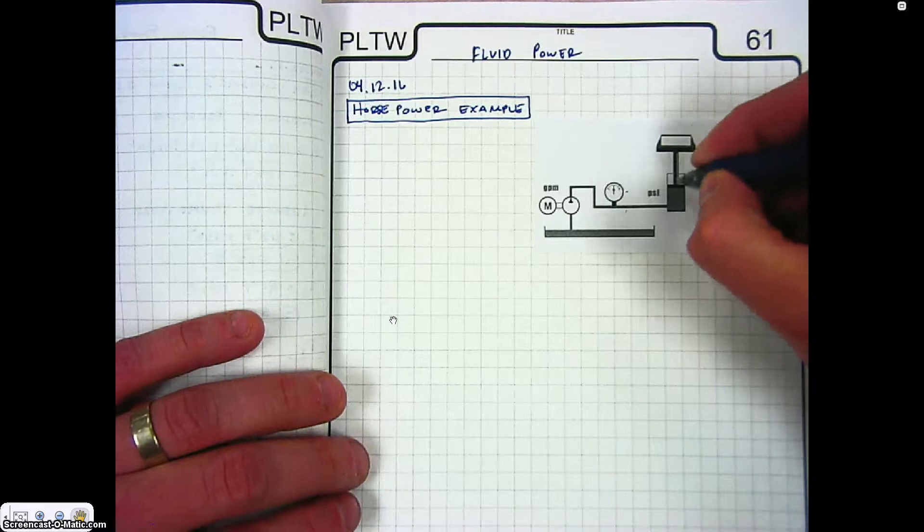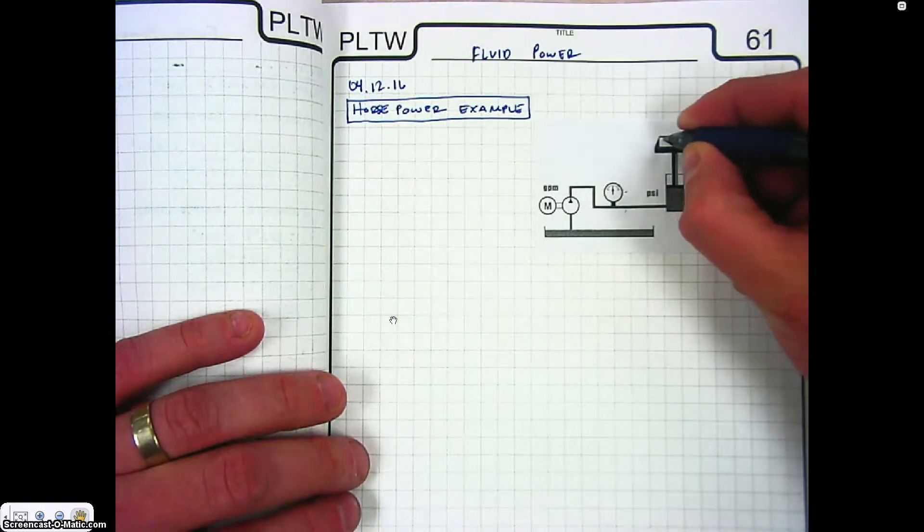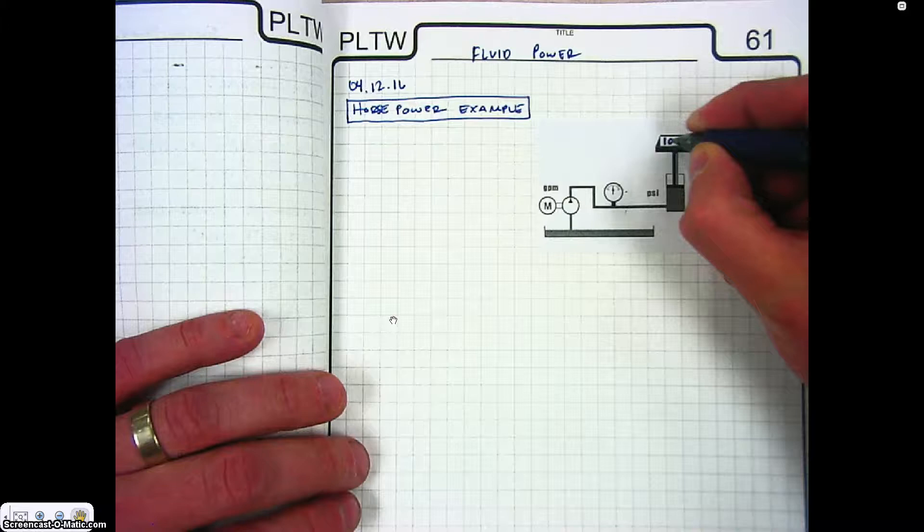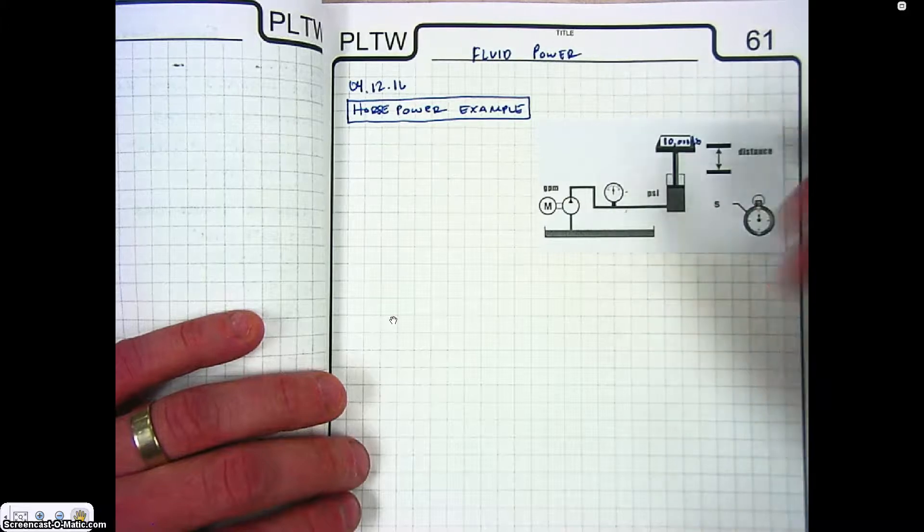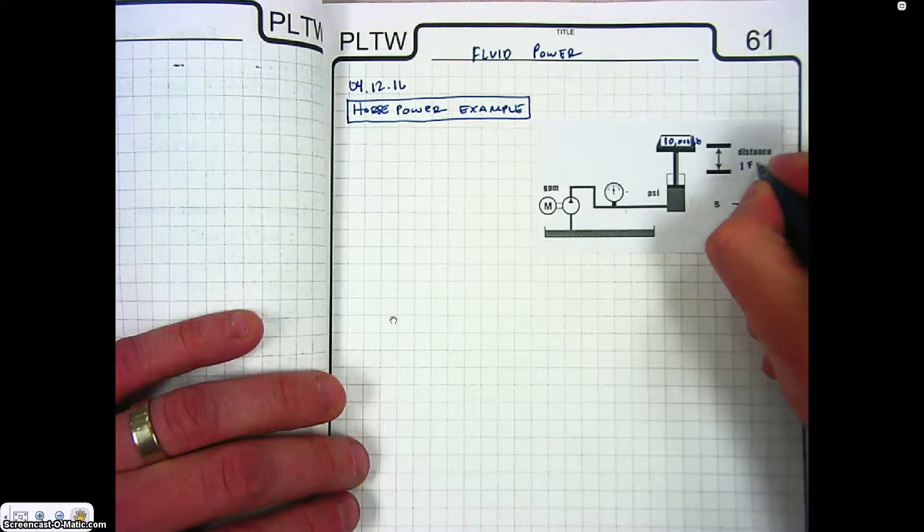We have a weight we are lifting up with our cylinder. In this case, we're going to make that weight 10,000 pounds and we're going to lift it a distance of one foot. We're going to do all of that in three seconds.